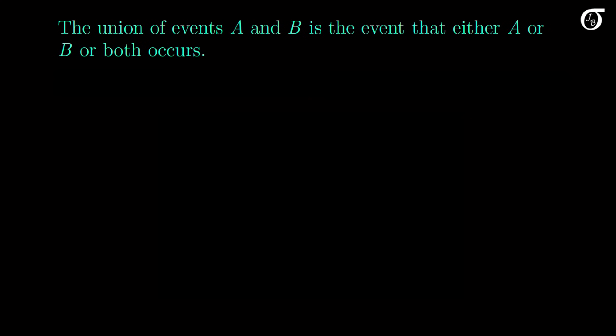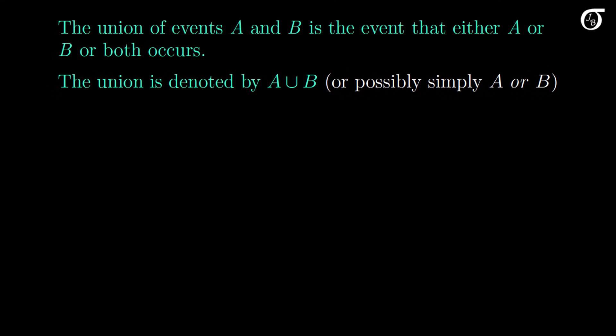The union of events A and B is the event that either A or B or both occurs. In set notation, the union is denoted by the union symbol — A union B — but you might simply see A or B. When we use the term A or B in probability, we are referring to their union and using the word OR in the inclusive sense. A or B means A or B or both.